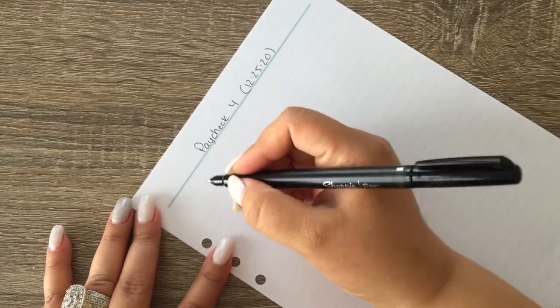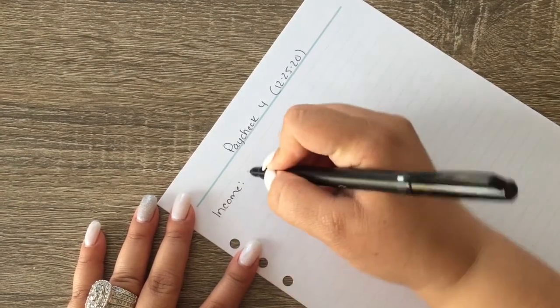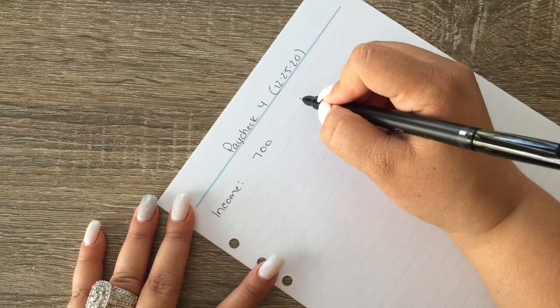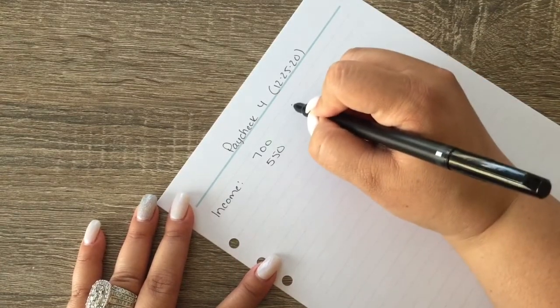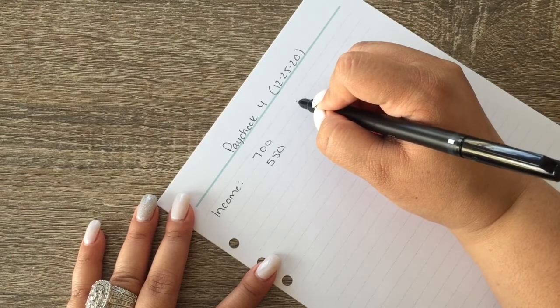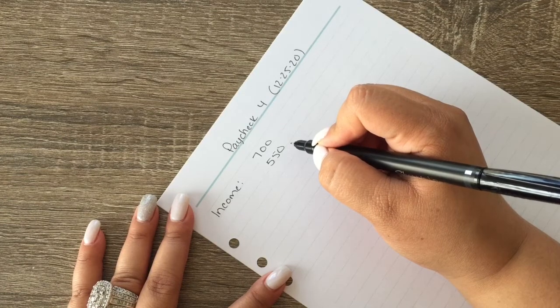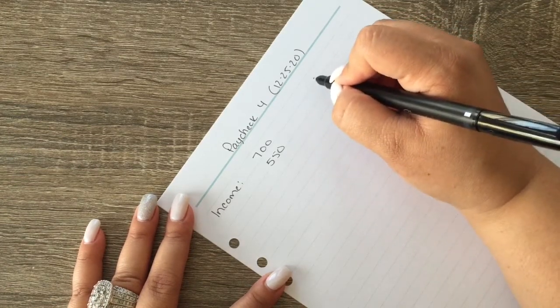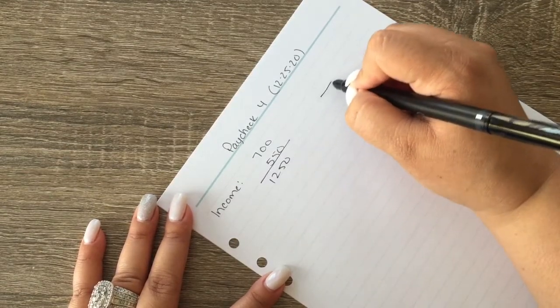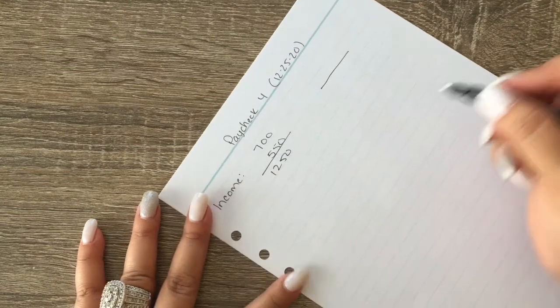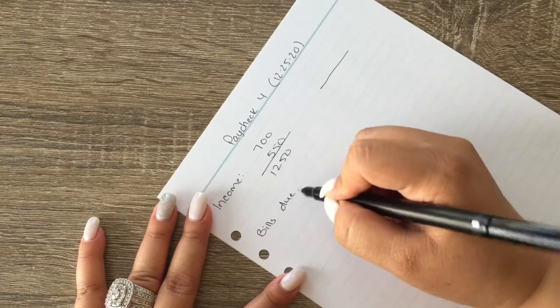Let's get started. We have income first and I do budget myself for $700 and I guess I could put my husband's down here at $550. Then up here we can do the actual, yeah up here we'll do the actual, so this is $1250 what we actually get. Okay, so bills due from the 20th.